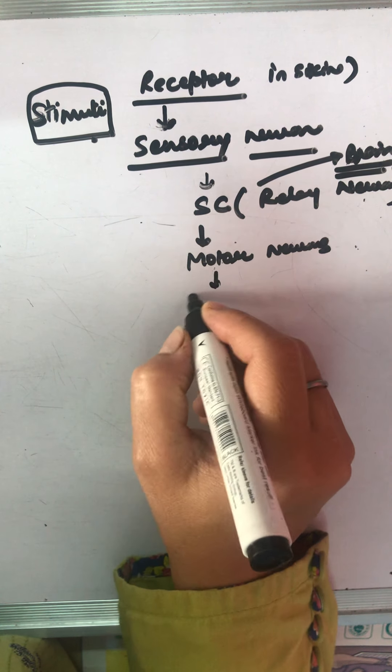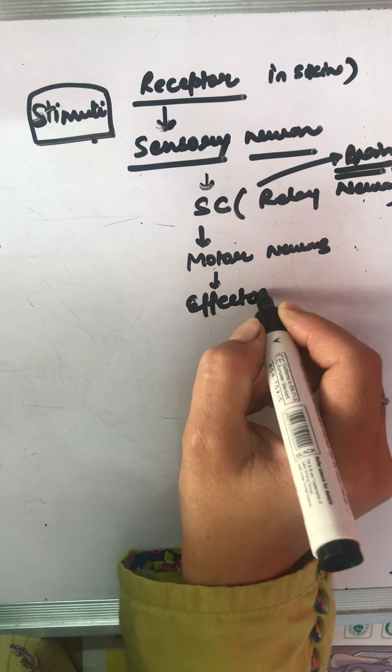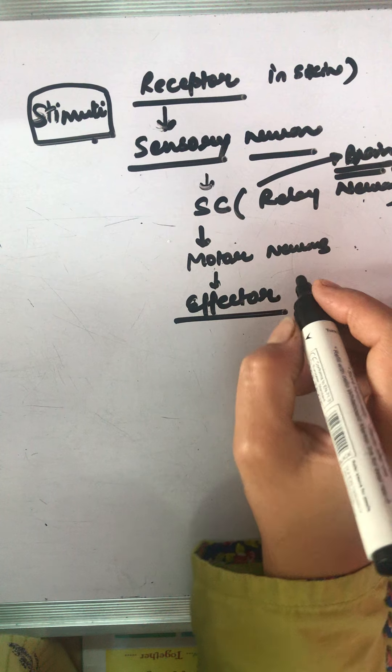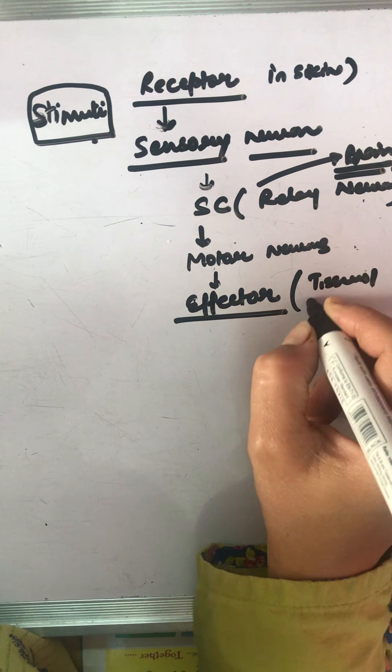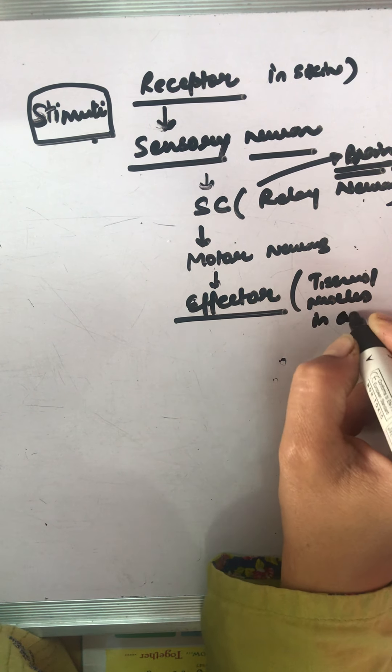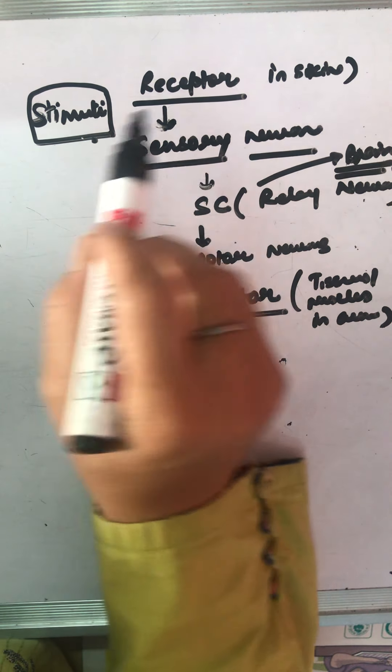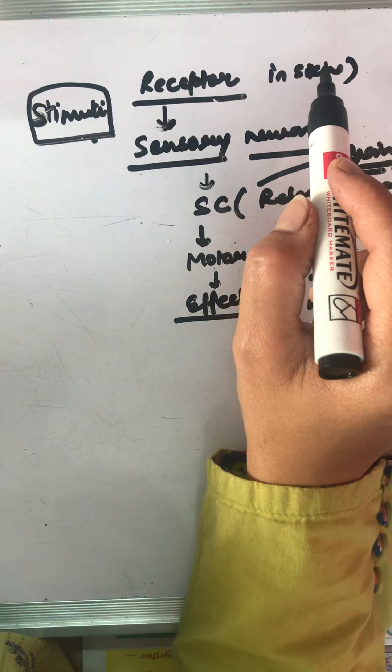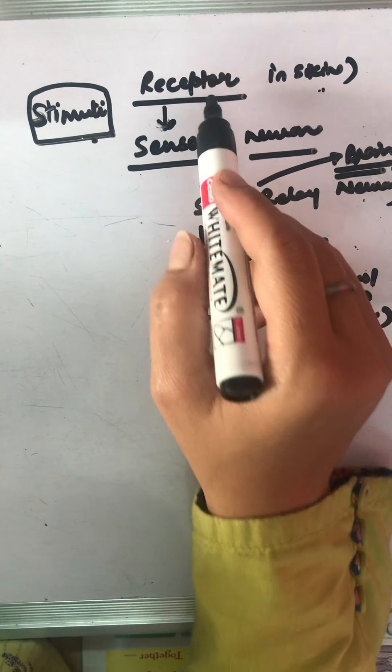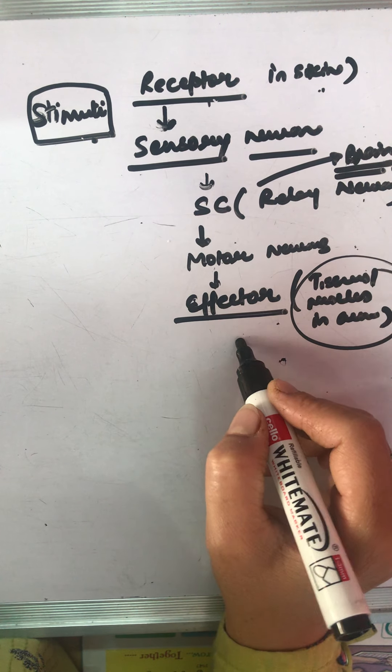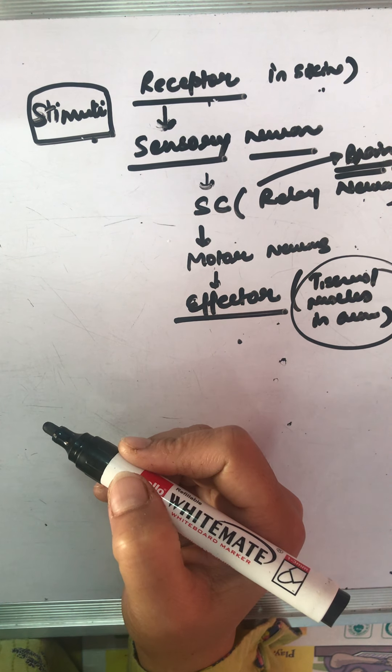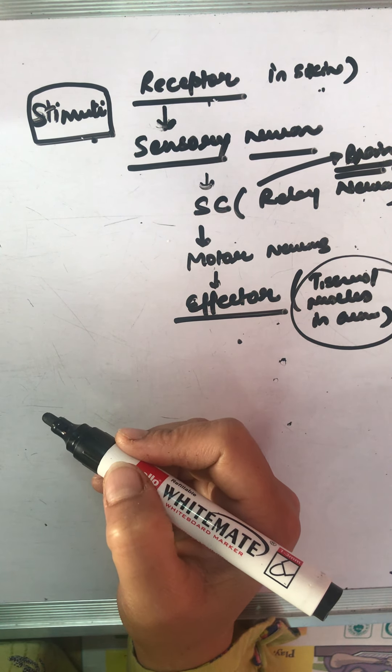Where? To the effector muscles. These effector muscles can be the tissues or the muscles in arm. If we are touching a hot object, then receptors in skin of hand will be the receptor, and tissues or muscles in arm will be the effector, because then only we can pull back the arm.